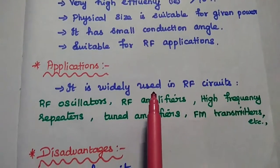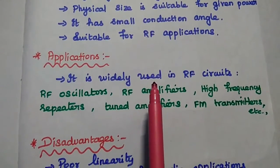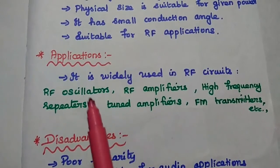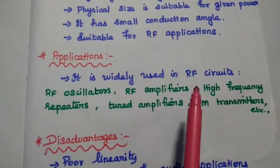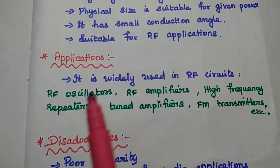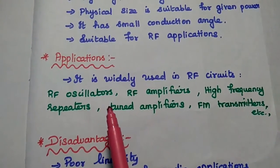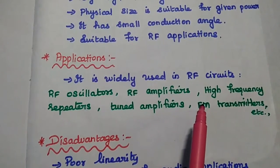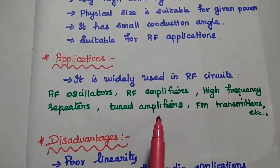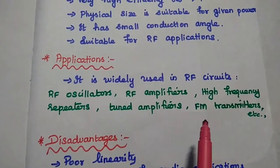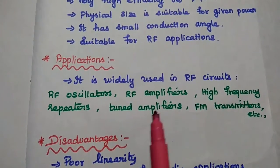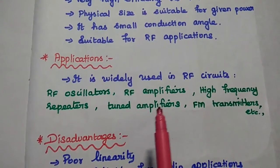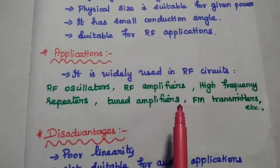The major applications of class C amplifiers are in RF circuits such as RF oscillators, RF amplifiers, high frequency repeaters, tuned amplifiers, FM transmitters, etc. It is widely used in the radio frequency range.